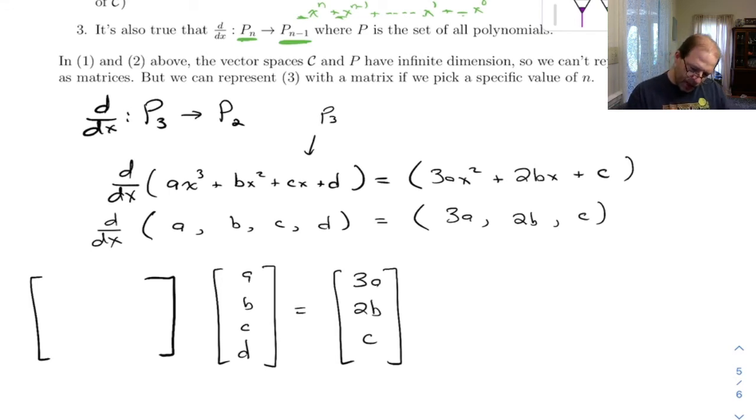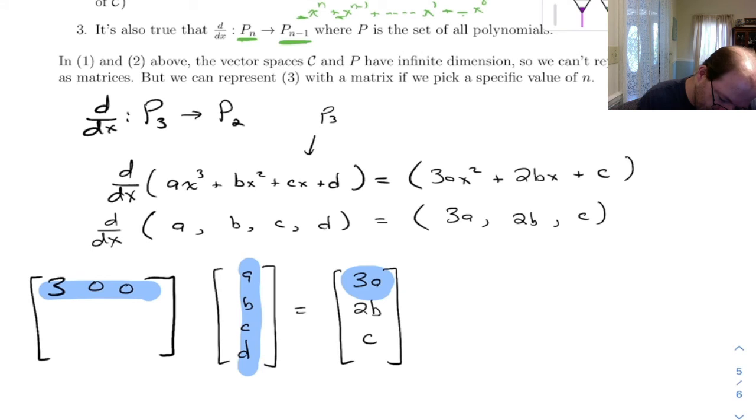This top row here, if I'm trying to figure out what needs to go there, we're going to take this and multiply it by this and get this. If you think about what needs to go there, it's just 3 times a plus 0 times b plus 0 times c plus 0 times d. Then to get the 2b, we do 0a, 2b, 0c, 0d. Then to get the c, we'd have 0, 0, 1, 0.